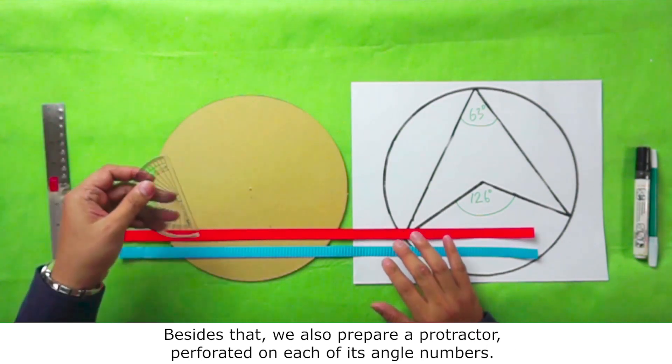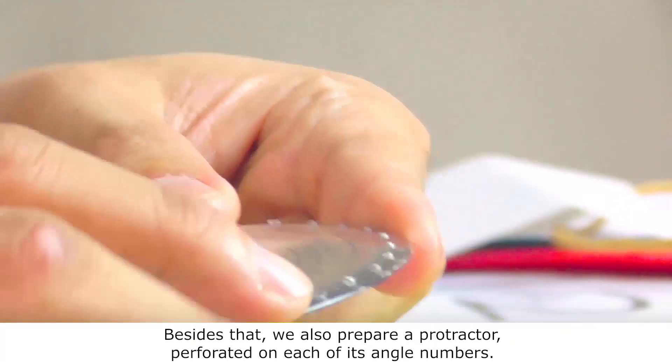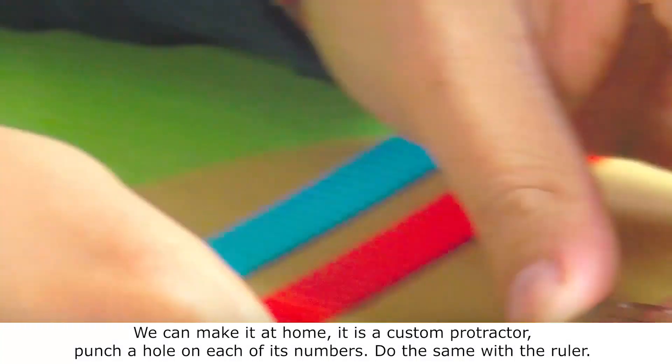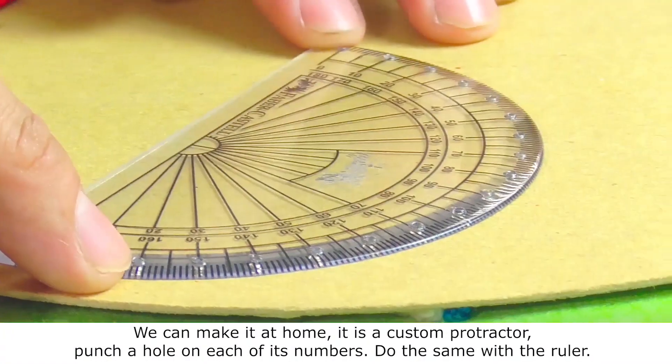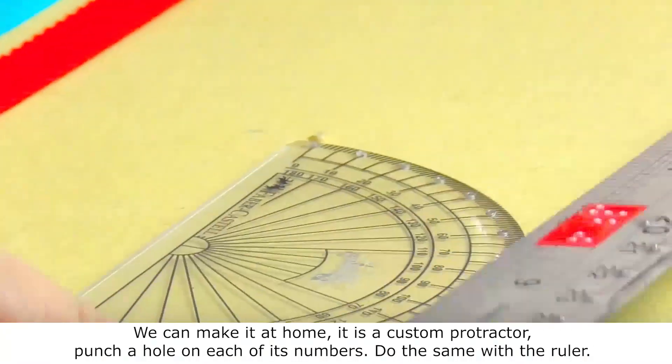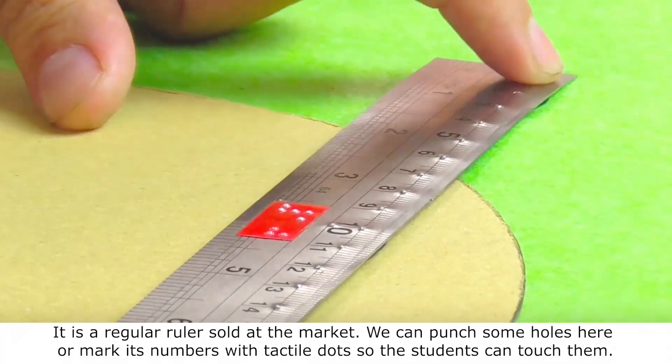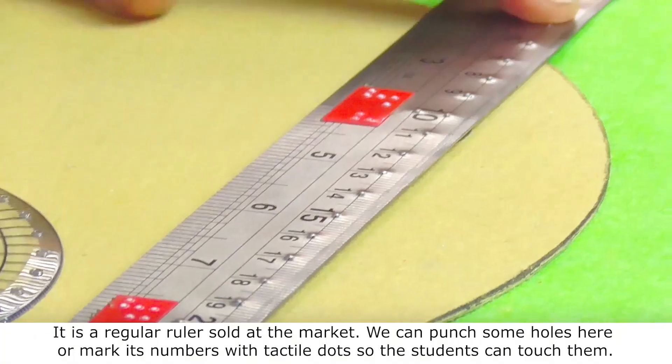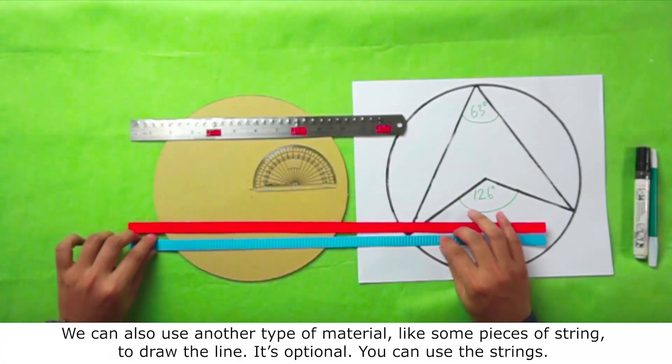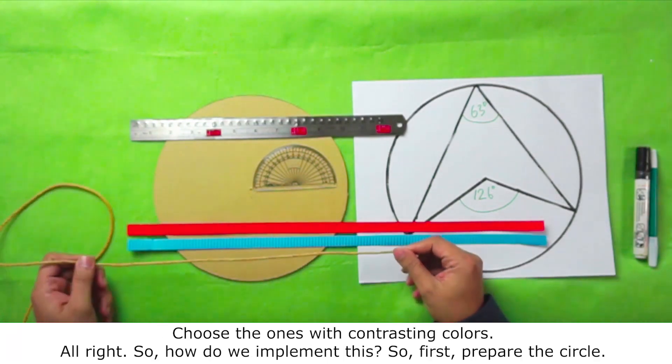Besides that, we also prepare a protractor. Perforate it on each of its angle numbers. We can make it at home. It is a custom protractor. Punch a hole on each of its numbers. Do the same with the ruler. It is a regular ruler, sold at the market. We can punch some holes here or mark its numbers with tactile dots so the students can touch them. We can also use another type of material, like some pieces of string to draw the line. It's optional. You can use the strings. Choose the ones with contrasting colors.